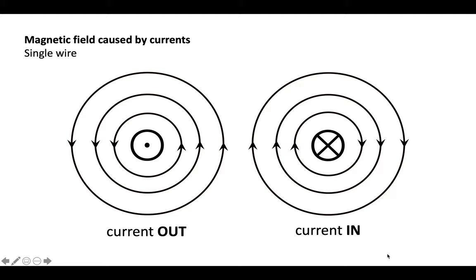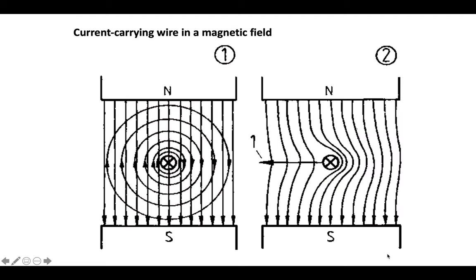That field is created when a wire is just in isolation, just sitting there while carrying current, with no other noticeable magnetic fields around - there's always the Earth's magnetic field but it's not a very strong field. However, if you place a current-carrying conductor inside a pre-existing magnetic field that is of equal or greater strength, then you will have an effect. On the left-hand side here you can see there's an external magnet with a north pole at the top and a south pole at the bottom.